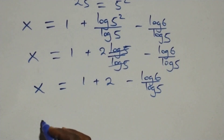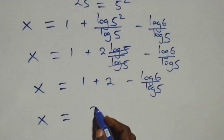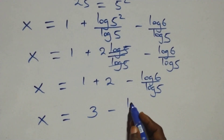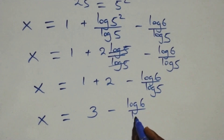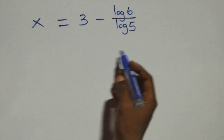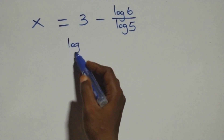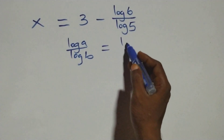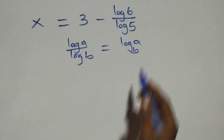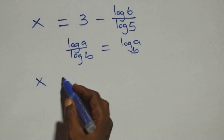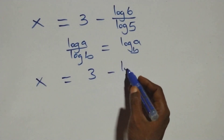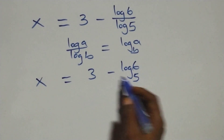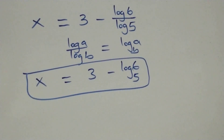This becomes x equals 1 plus 2, that's 3, then minus log 6 over log 5. Then we apply the change of base: when we have log a over log b, this is the same as log a to base b. So x equals 3 minus log 6 to base 5.